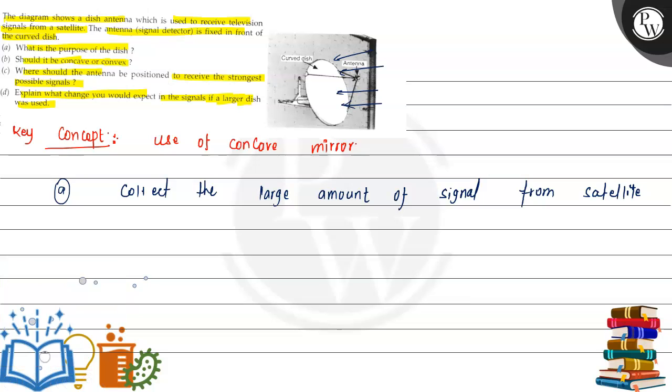Second one, what is it asking? It's asking what type of mirror is this? You can see that the reflecting part which is there is inward curved. This means it's a concave mirror.